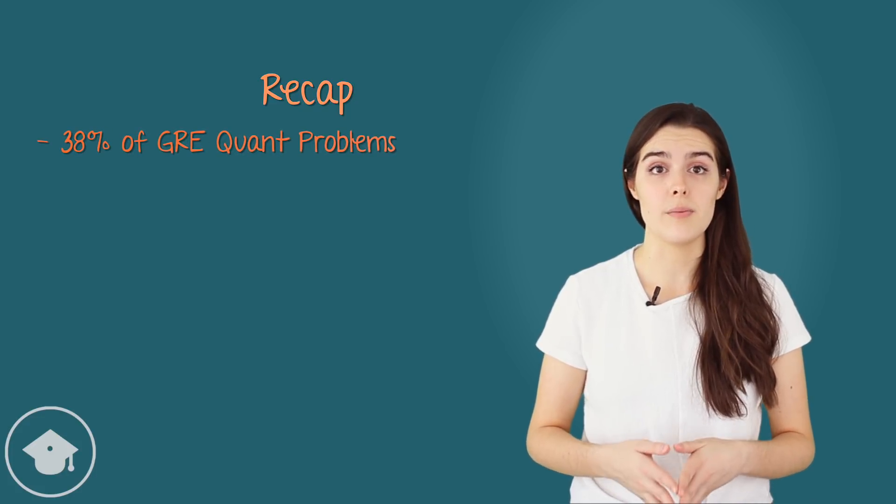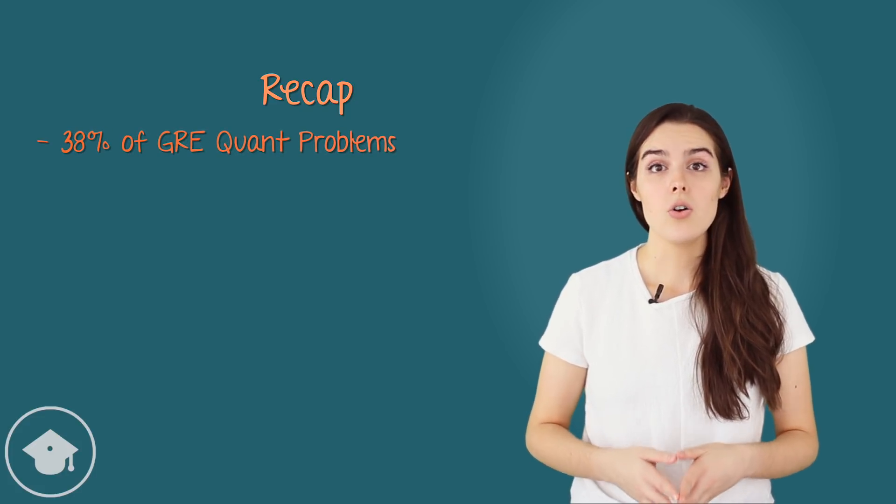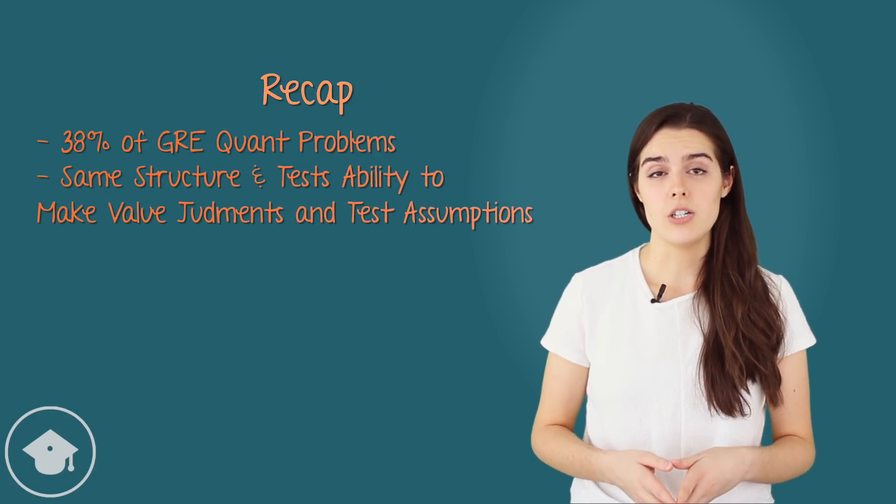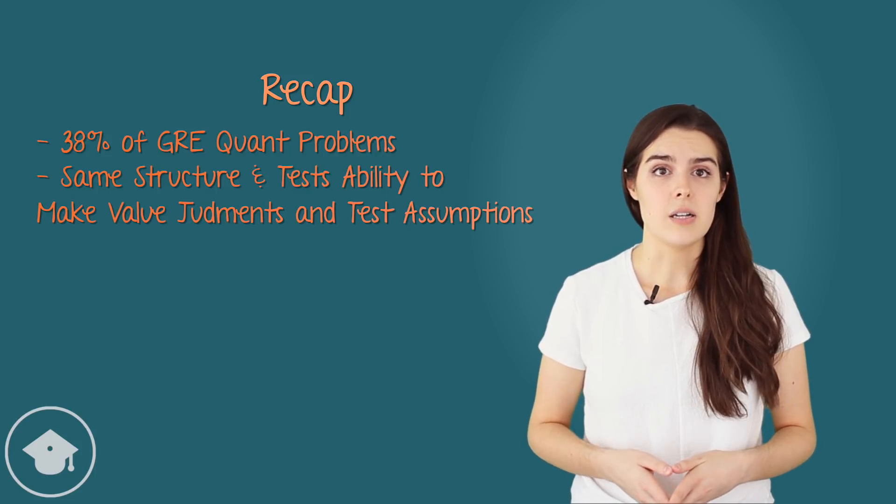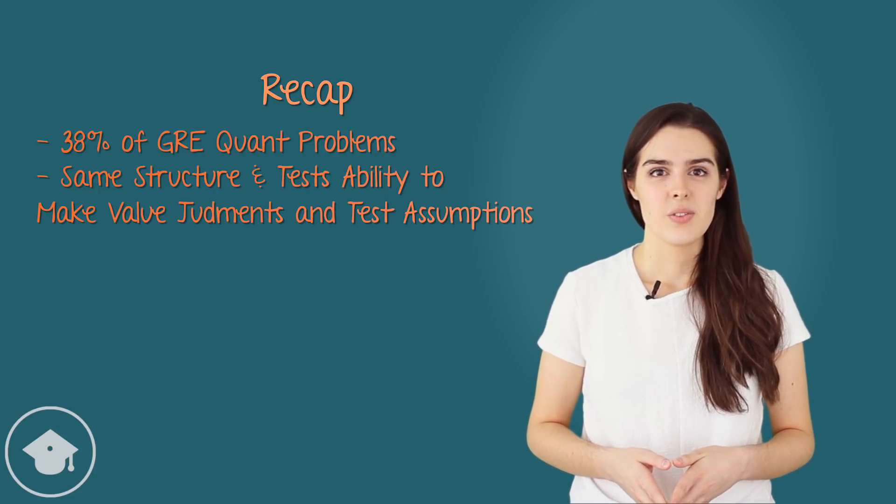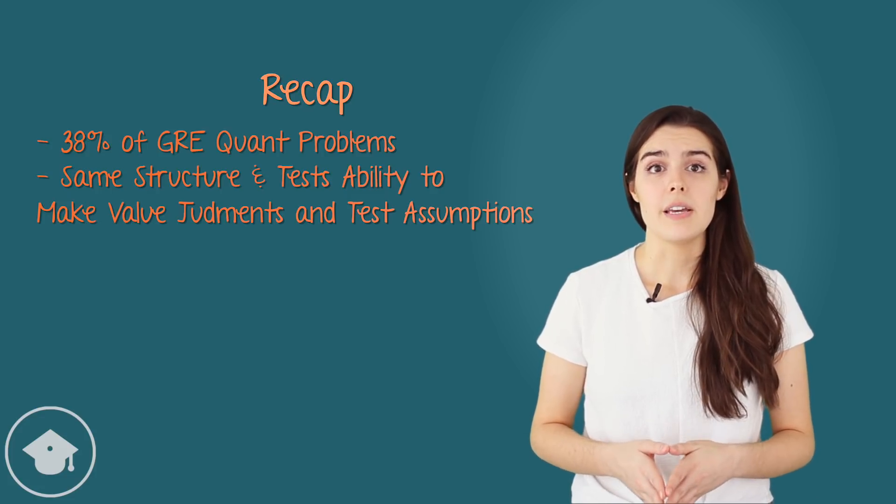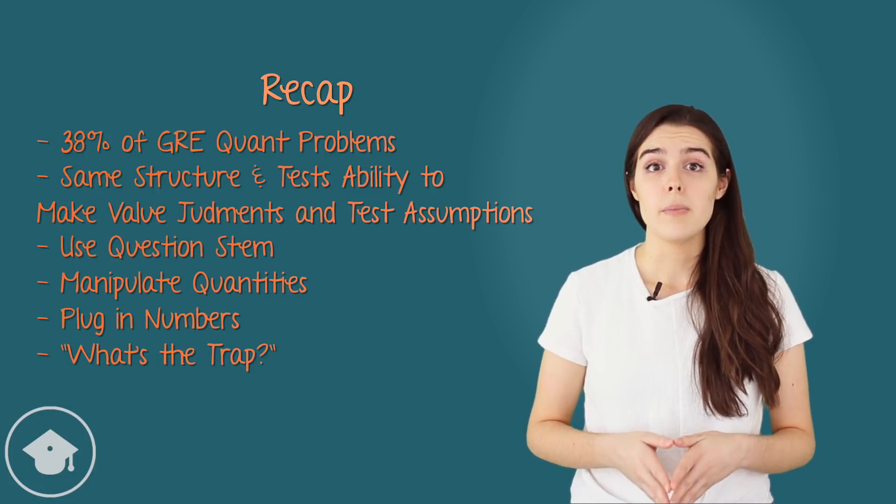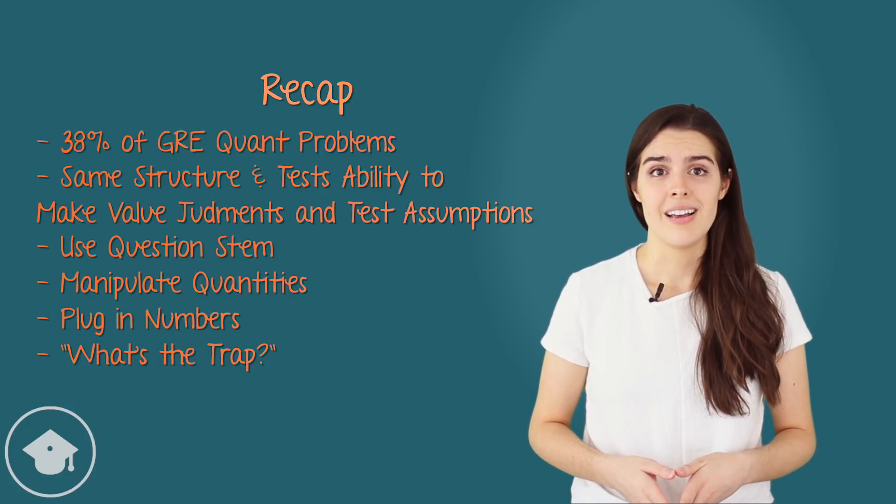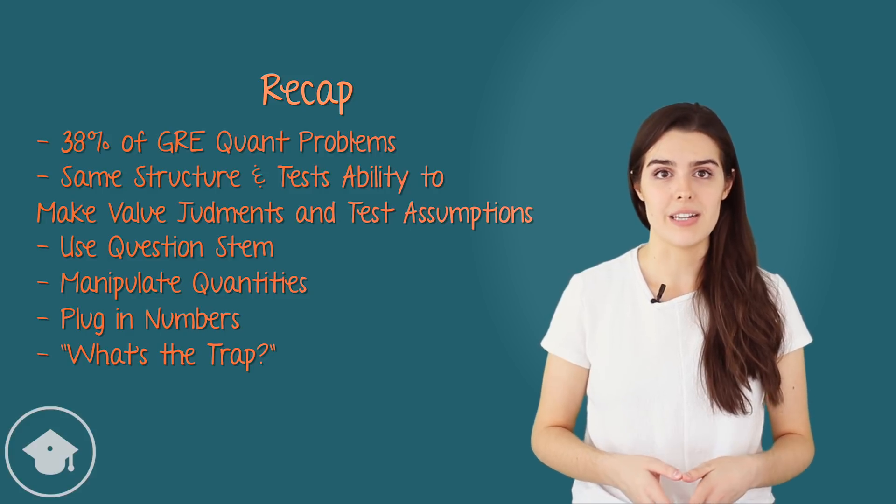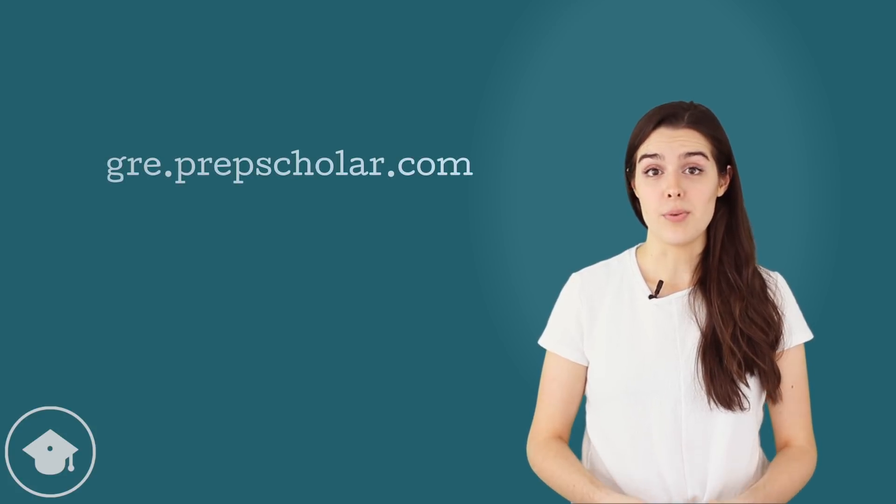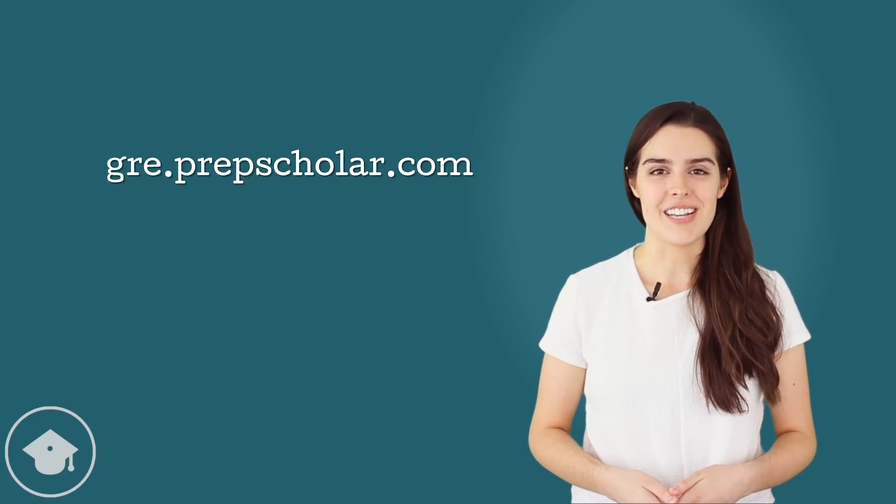And that's how you can beat GRE quantitative comparison questions. So, to recap, quantitative comparison questions account for about 38% of quant problems. That's a lot. All quantitative comparison questions have the same structure, which tests our ability to determine the value of limited information and analyze assumptions and edge cases. We can approach these problems most effectively by giving enough attention to the question stem, manipulating the quantities, plugging in smart numbers, and asking what's the trap before committing to an answer. Thanks again for watching, and feel free to check us out at gre.prepscholar.com for more great GRE content. See you next time.